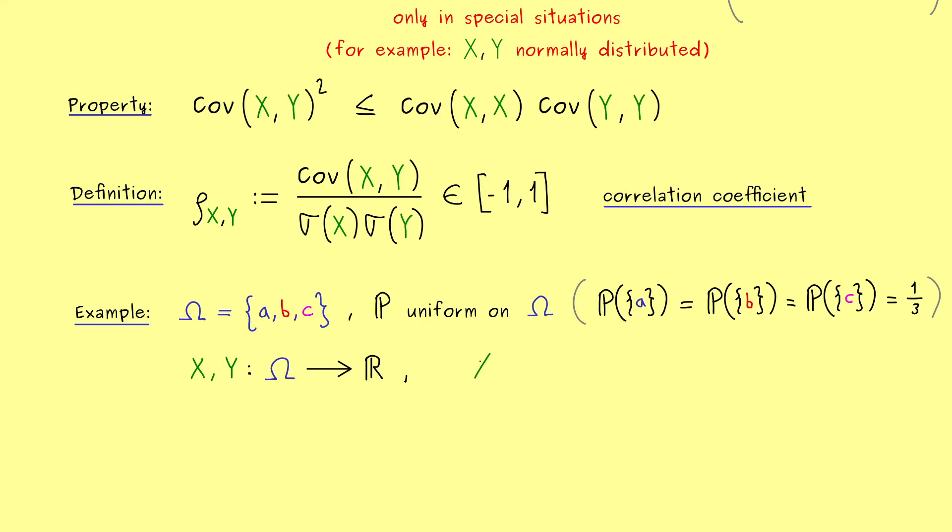And now missing is only the explicit definition of the two random variables. And we can do that by saying what they do with the 3 elements. Now, X should send the first one to 1, the second one to 0 and the last one to minus 1. So not so complicated and now let's do the same for Y. Now, most importantly, I want that Y is equal to 0 whenever X is not equal to 0.